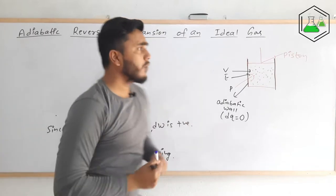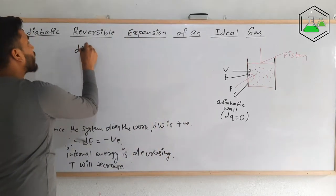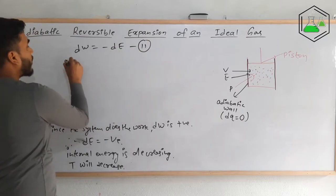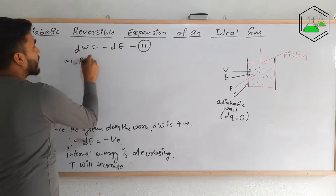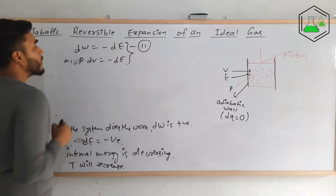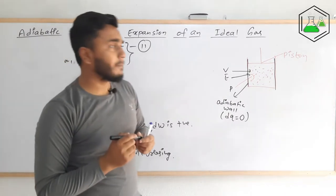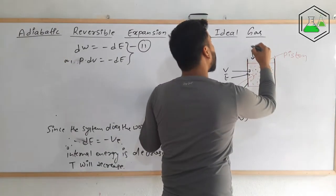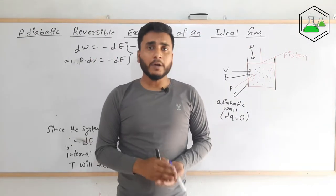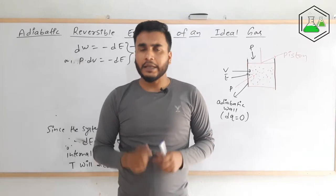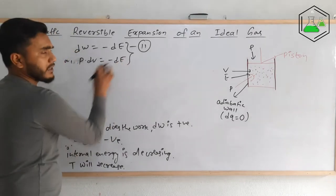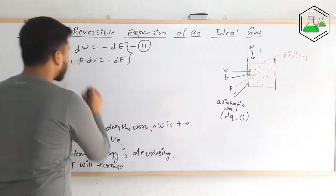We can write dW = −dE, or equivalently p dV = −dE. This is equation number two, where dV is the change in volume and p is the external pressure. Now let's introduce the concept of molar heat capacity at constant volume, because in that formula there is change in internal energy.